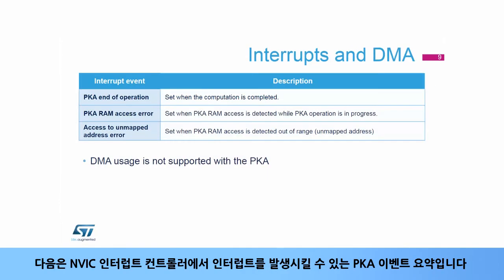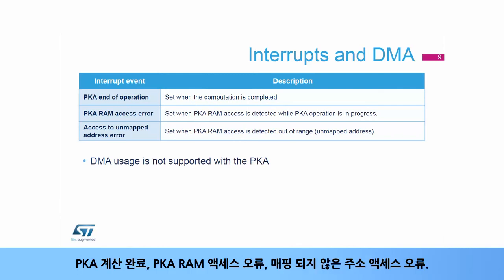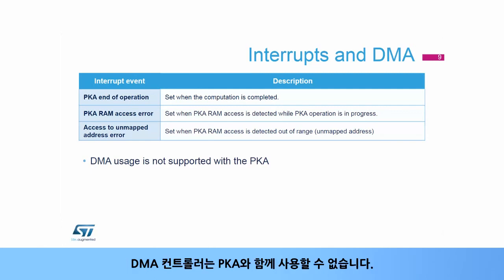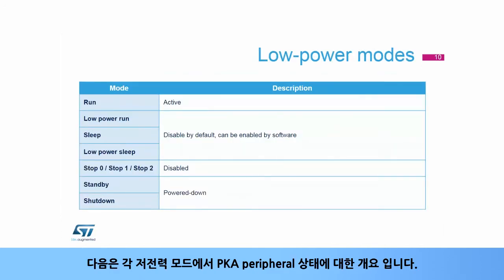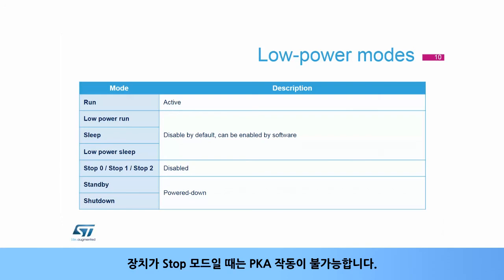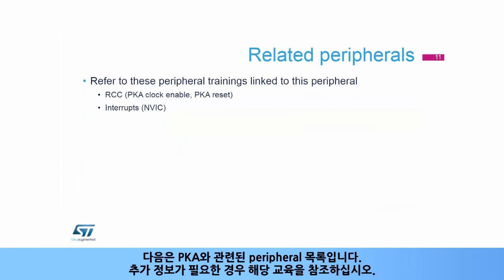Here is a summary of the PKA events able to trigger an interrupt in the Nested Vectored Interrupt Controller (NVIC): PKA computation completed, PKA RAM access error, and access to unmapped address error. The Direct Memory Access (DMA) controller cannot be used with the PKA. Here is an overview of the PKA peripheral status in each of the low power modes — PKA operations are not possible when the device is in stop mode.